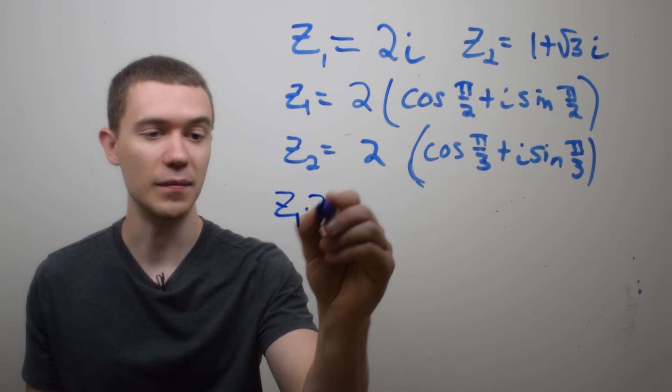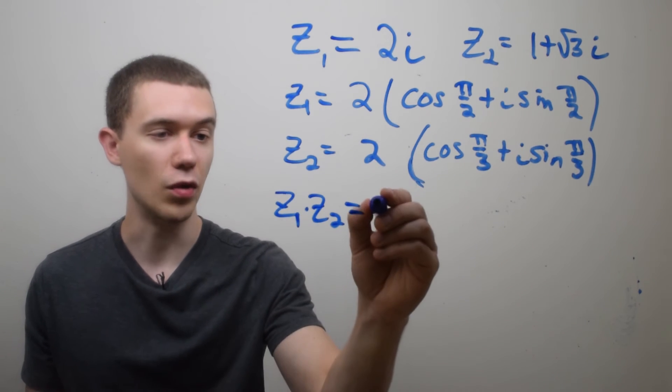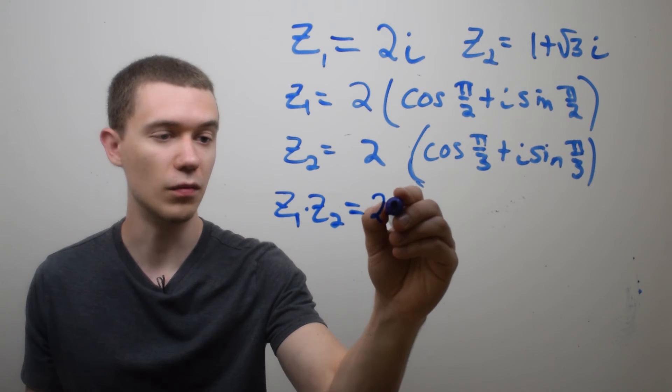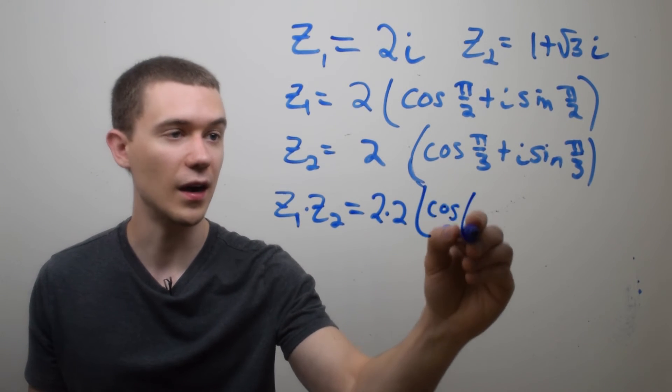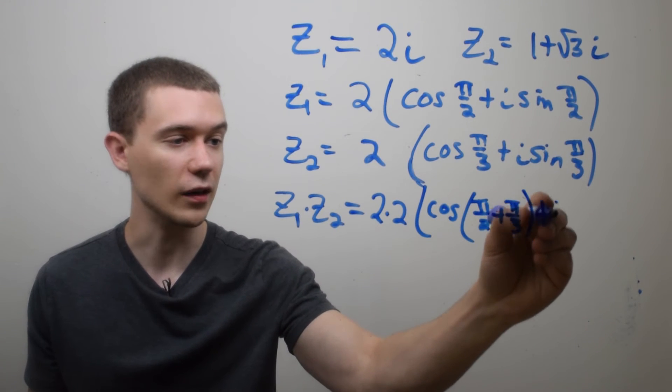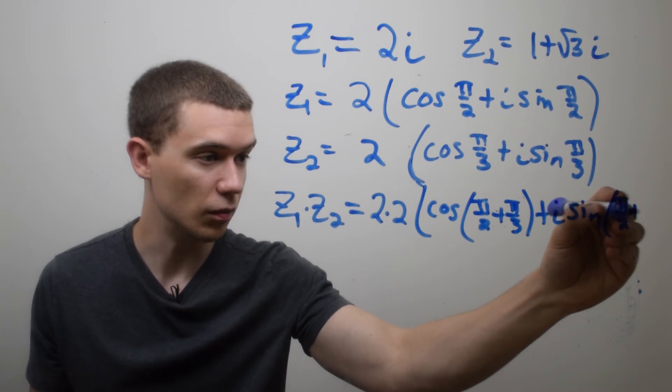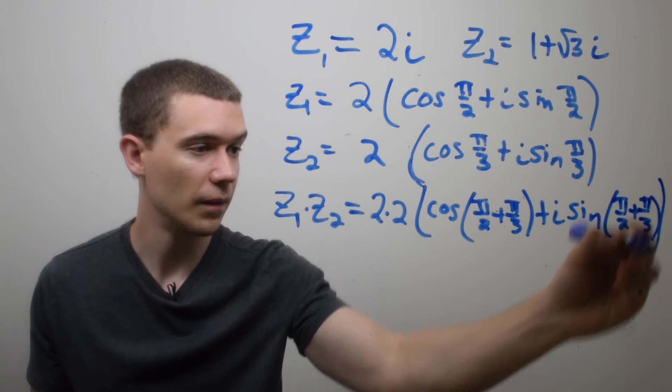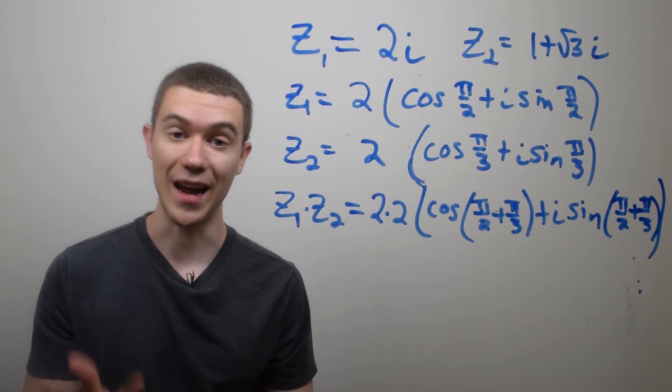So let's do z1 times z2. How does that work? Well I multiply the radii, the two modulus, so that's 2 times 2, and that's times cosine of π/2 plus π/3. This time I add the arguments, plus i sine of π/2 plus π/3. So multiplication is just multiplying the radii and adding the arguments.